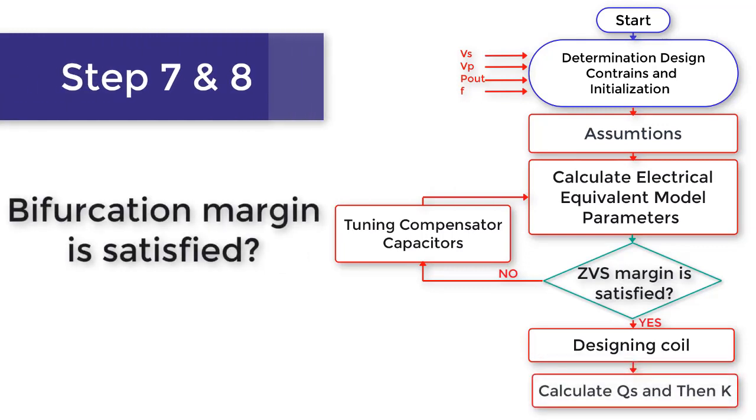In the next two steps, to achieve the desired zero phase angles, the power quality factor on the secondary side and the coupling coefficient are calculated. If the coupling coefficient is smaller than the critical coupling coefficient, the algorithm stops.